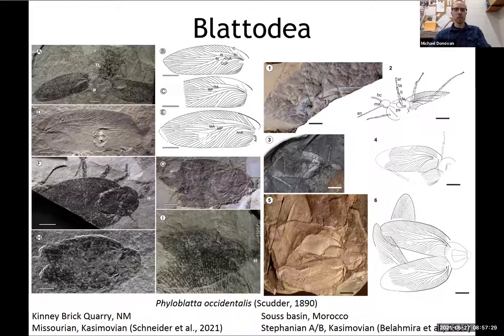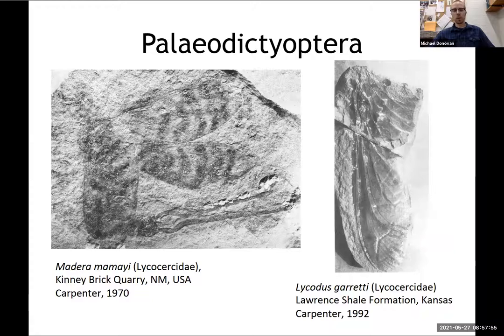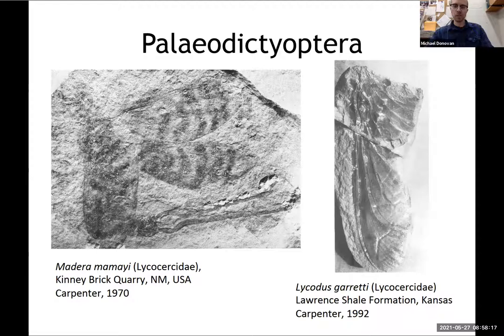Here are some nice pictures of fossil roaches from this time. A lot of these are widespread — based on Jörg Schneider's work, these are from the Kinnebrick quarry on the left and from Morocco on the right. These are probably the most commonly described fossils in the Casimovian and are good for biostratigraphy. The Palaeodictyoptera are also one of the other really common fossils during the Casimovian and Pennsylvanian in general. These are insects that were piercing and sucking, feeding on fluids in plants. They could get pretty large — some about 50 centimeters in wingspan.